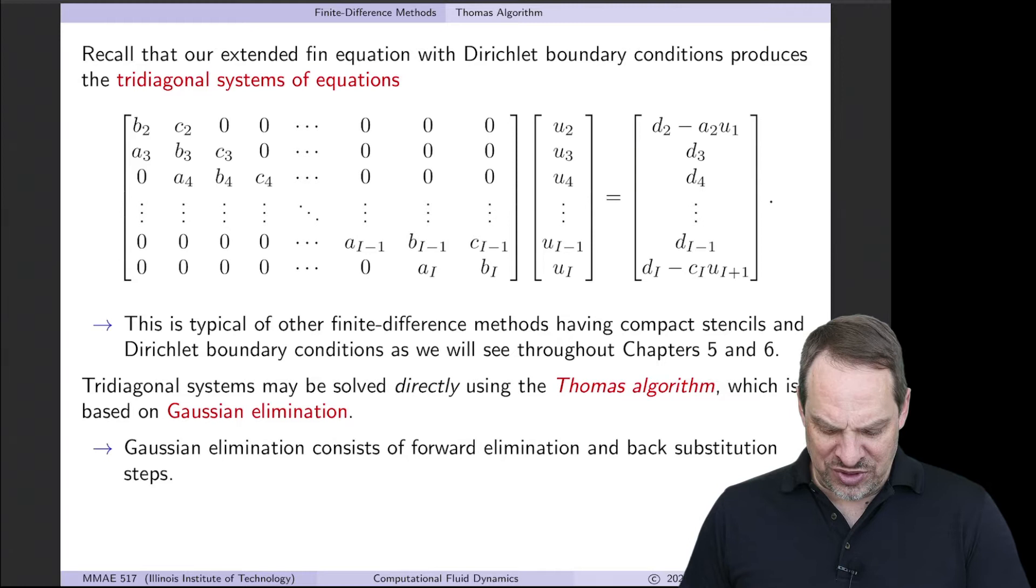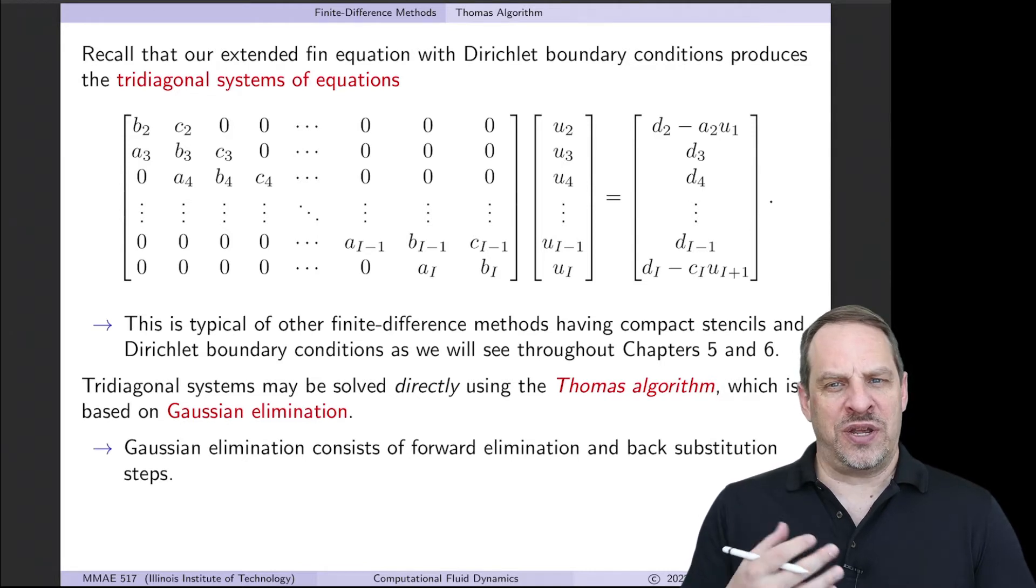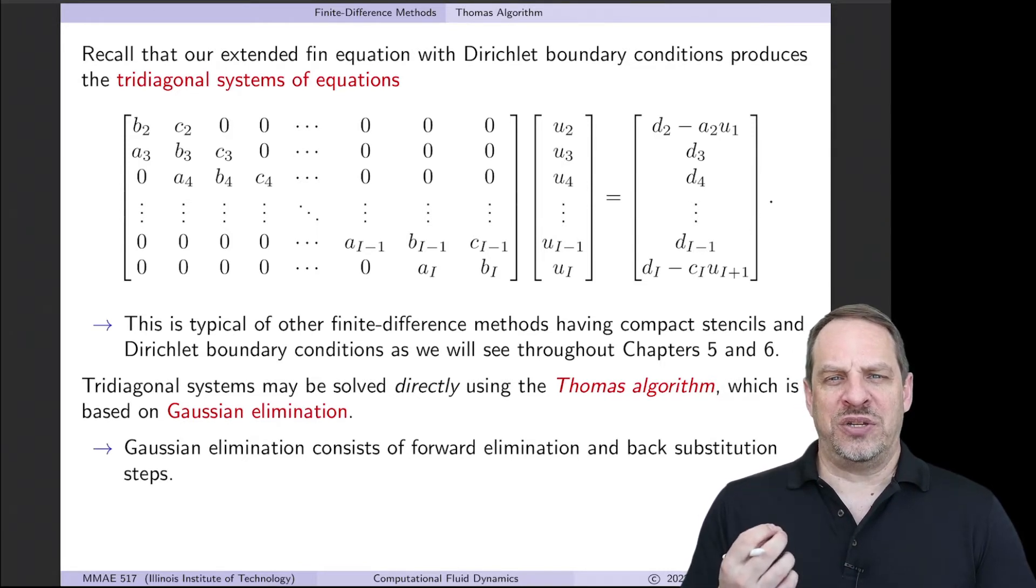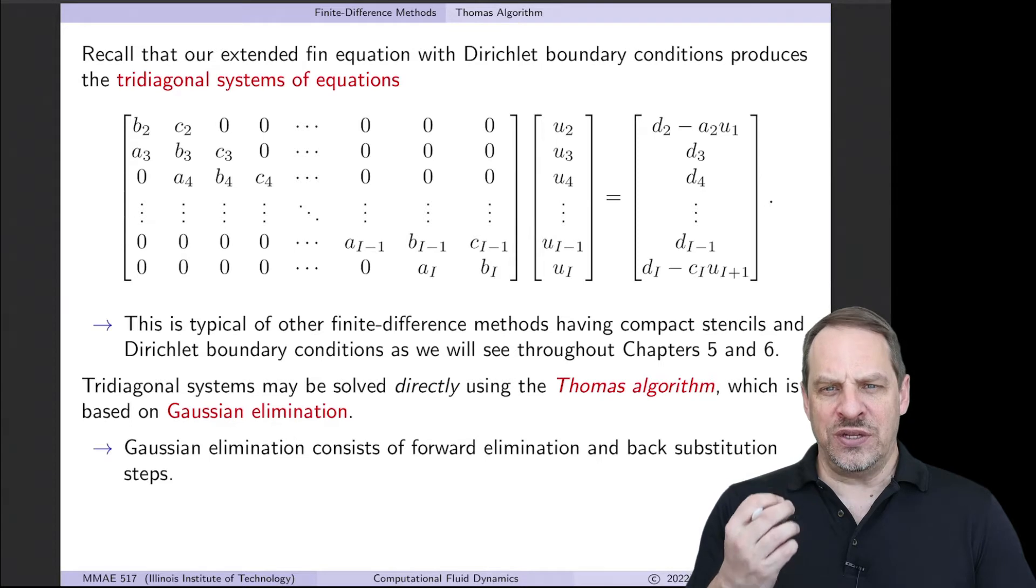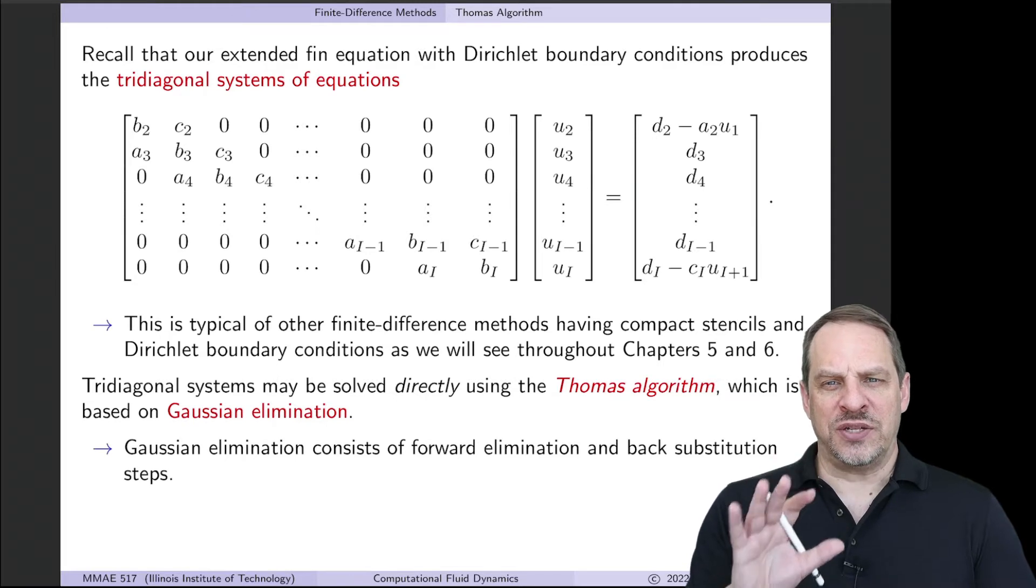It's known as the Thomas algorithm, and it's based on Gaussian elimination. Now, you may have heard me say or read that the Gauss elimination procedure is actually very inefficient when implemented on a computer and applied to very large systems of equations. And that's true. So why are we using it here?